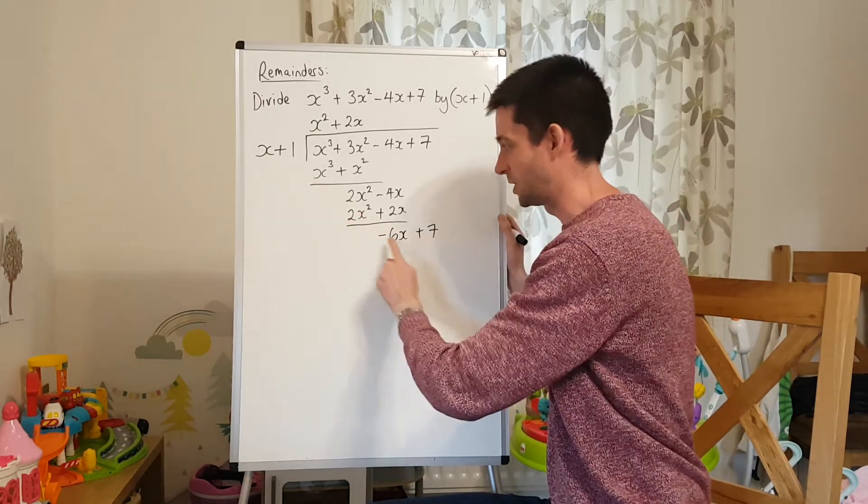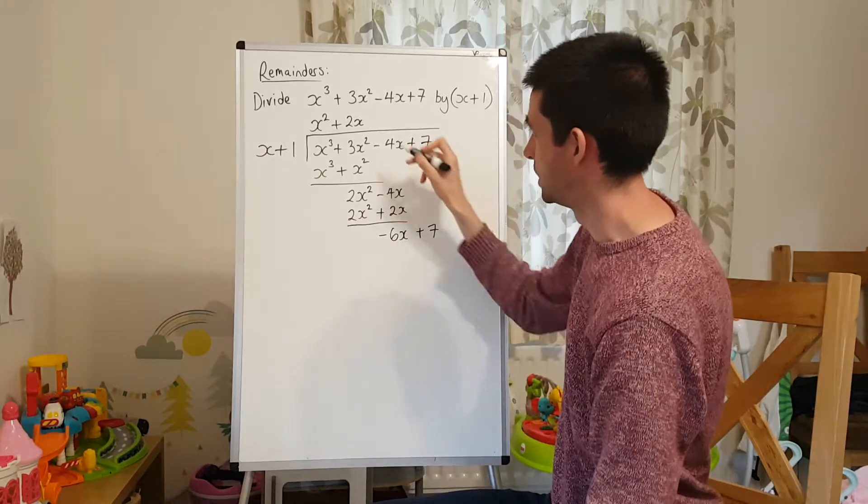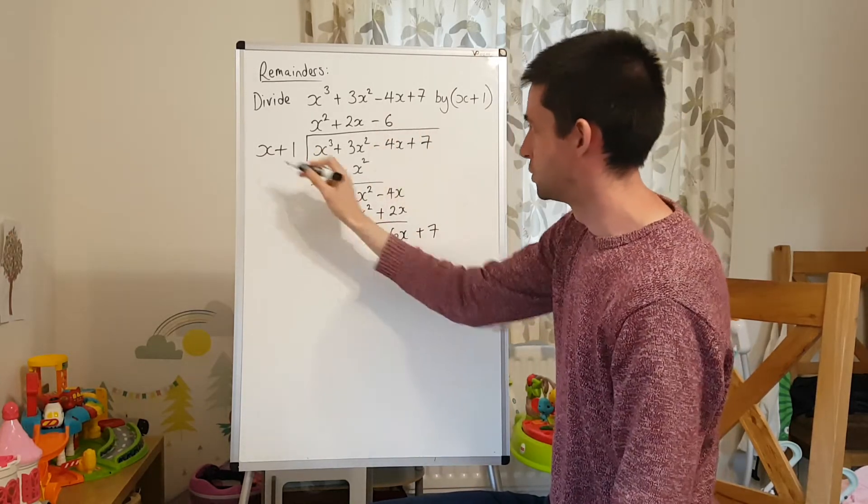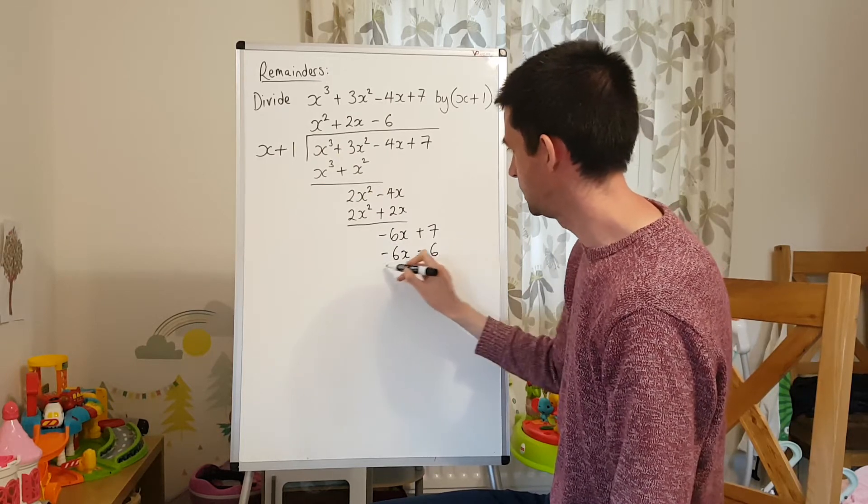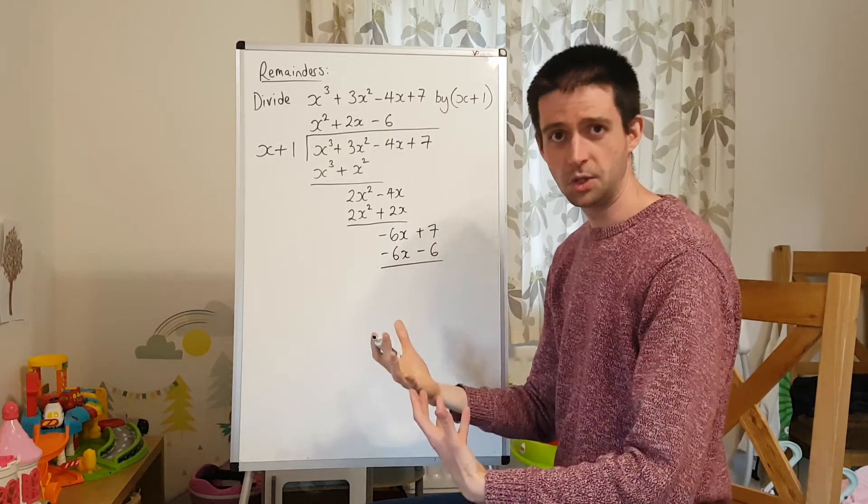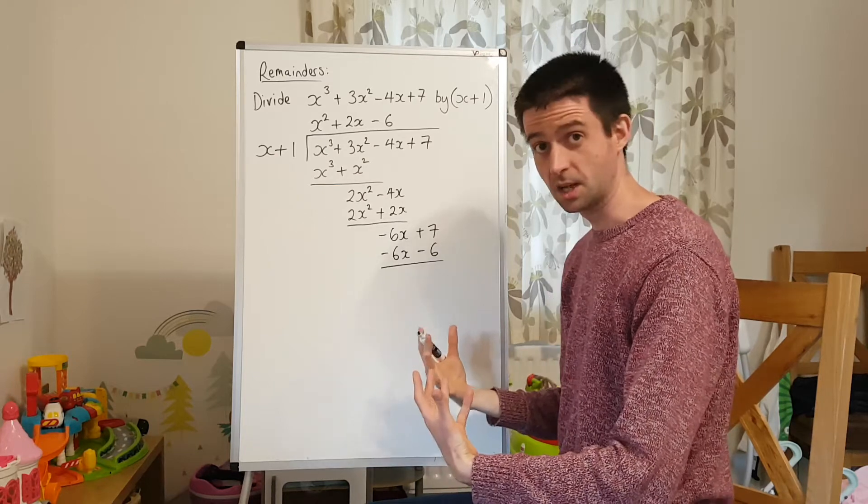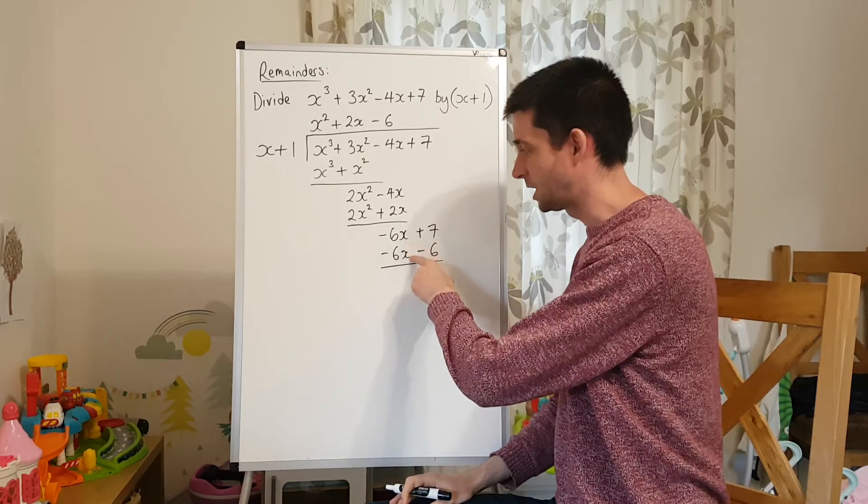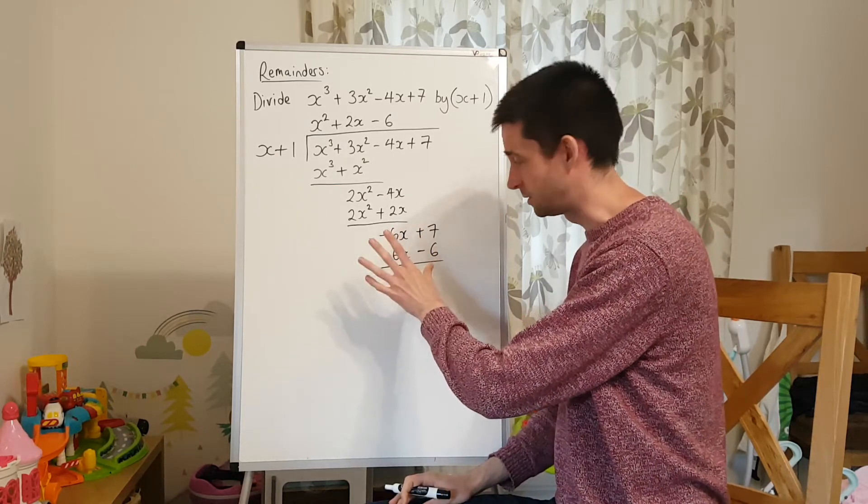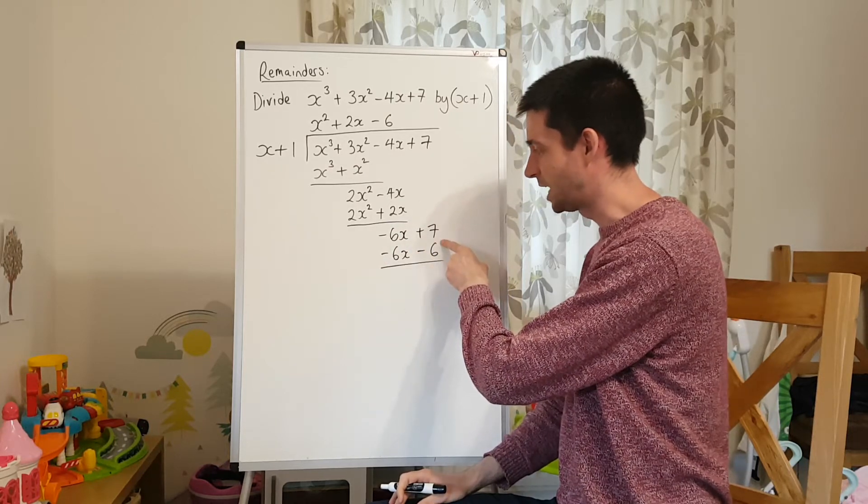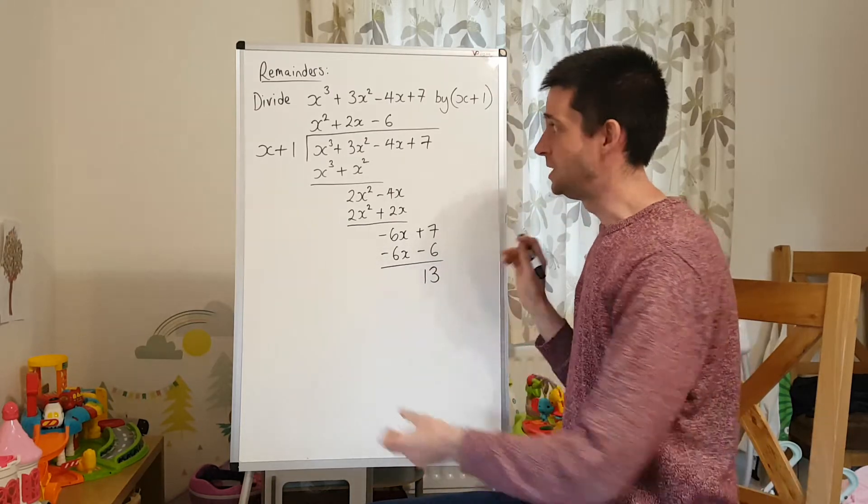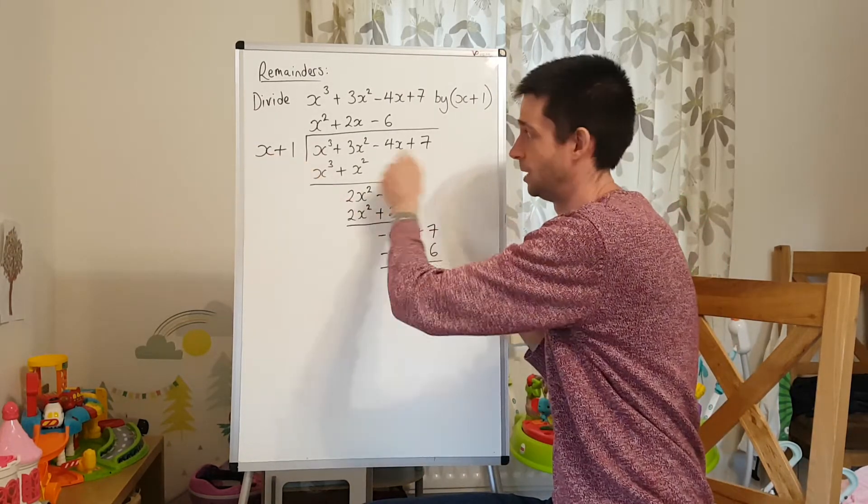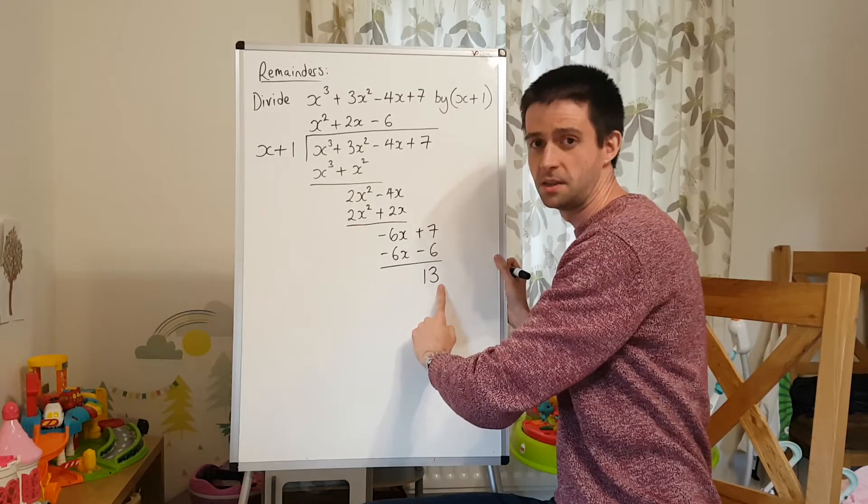How many times does x go into negative 6x? Well, minus 6, negative 6. Multiply back. Negative 6x minus 6. Now, here's the bit where we get the remainder. You may see this coming. Negative 6x take negative 6x is nothing. That's fine. But positive 7 take negative 6 is positive 13. So what that means is, this isn't a factor of this expression. We get a remainder of 13.